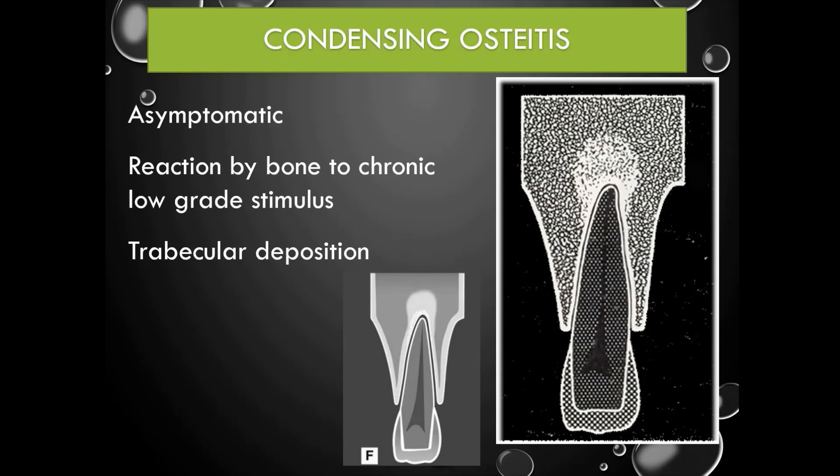Another condition is condensing osteitis. This is asymptomatic and represents a reaction by bone to a chronic low-grade stimulus. Because of this, there is increased trabecular deposition, and it appears as an ill-defined radio opacity at the peri apex.